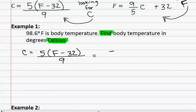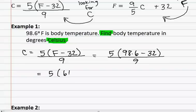All we must do is replace the F with ninety-eight point six. We can enter this into our calculator and find that ninety-eight point six minus thirty-two is sixty-six point six degrees. We then multiply this by five to find three hundred and thirty-three. When we divide by nine, we get an answer of thirty-seven.